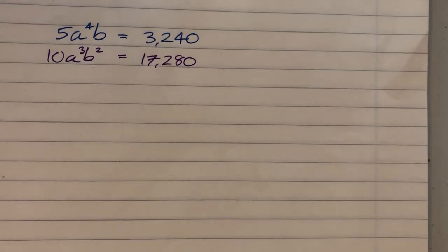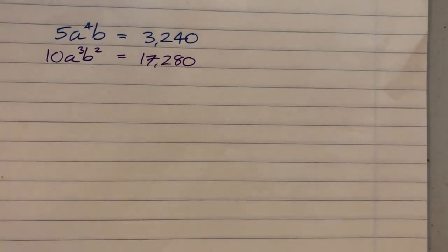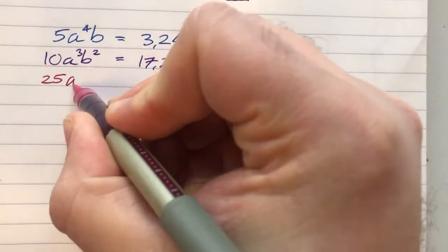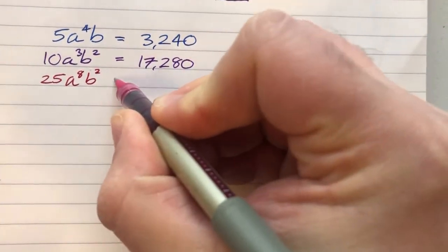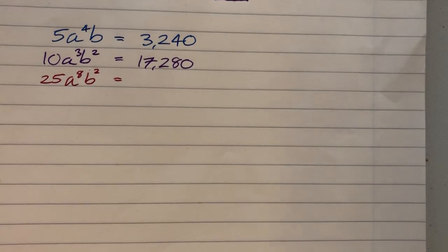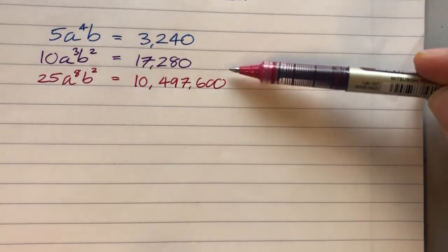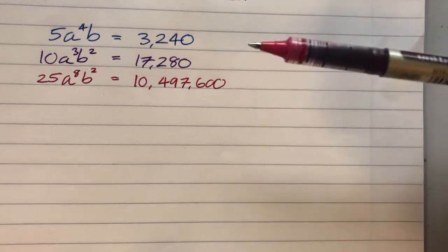So all that remains now is to solve this pair of simultaneous equations to find the values of a and b. There's a number of different ways that you can do this. The way that I'm going to choose to do it is I am going to square the top one so that both terms have a b squared in them. And then I'm going to divide by one by the other. So to take the top one, I'm going to get 5 squared is 25. A to the 4 squared, well, that's a to the 8. And b squared is b squared. And then I need to square the 3,240, which is something I don't know off the top of my head. There we go. And the calculator tells us it's 10,497,600.